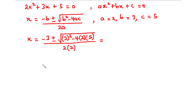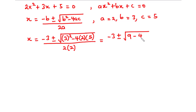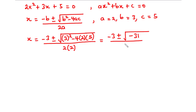Let's simplify. This becomes negative 3 plus or minus the square root of 3 squared is 9, minus 4 times 2 is 8, times 5 is 40. So we have 9 minus 40, and 9 minus 40 is negative 31. So we have the square root of negative 31, all divided by 4.